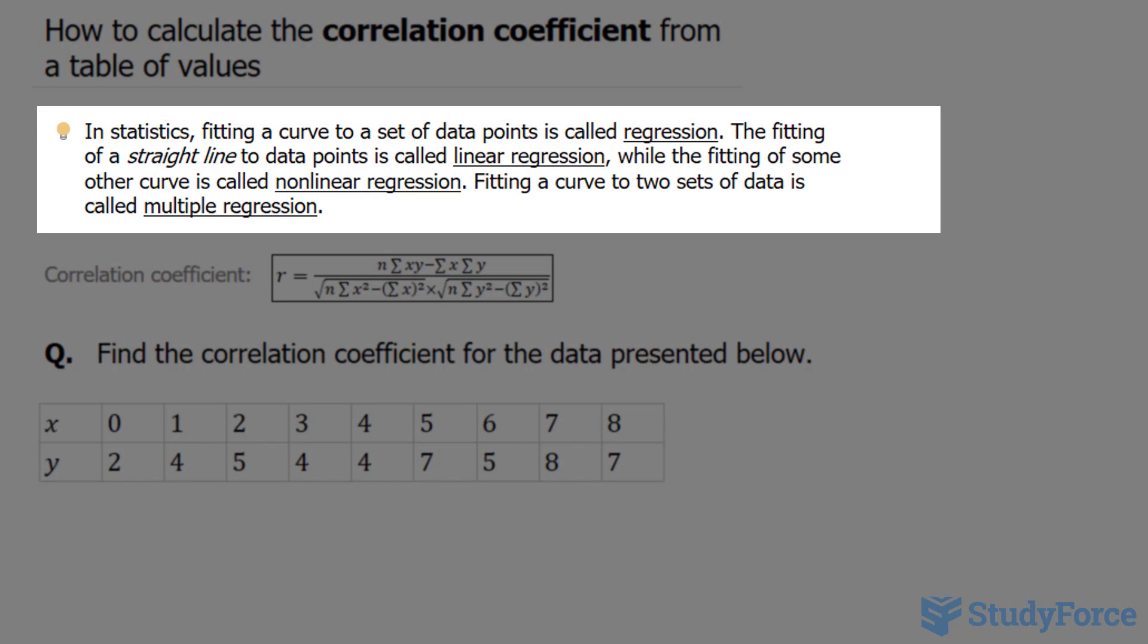In statistics, fitting a curve to a set of data points is called regression. The fitting of a straight line to data points is called linear regression, and that's what we'll be doing in this example.